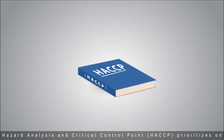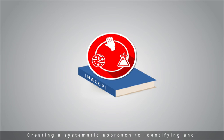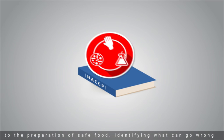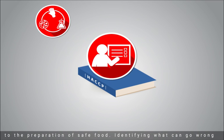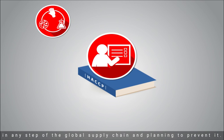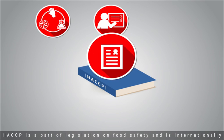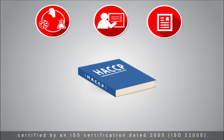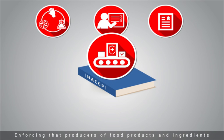HACCP prioritizes creating a systematic approach to identifying and controlling hazards — for example, microbiological, chemical, or physical contaminants that could pose a danger to the preparation of safe food — identifying what can go wrong in any step of the global supply chain and planning to prevent it. HACCP is a part of legislation on food safety and is internationally certified by ISO 22000, dated 2005.